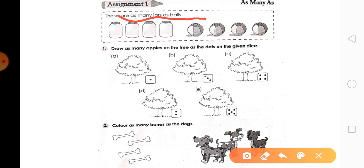Draw as many apples on the tree as the dots on the given dice. Dice में आपको यहां पर dots दीख रहे हैं, बच्चो. उतने ही dots, जितने dots हैं, उतने ही apples आपको tree के उपर draw करने हैं.